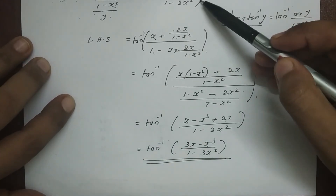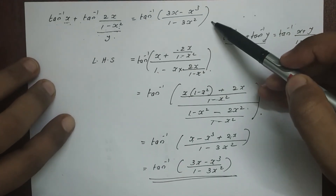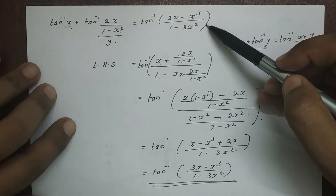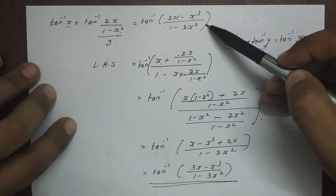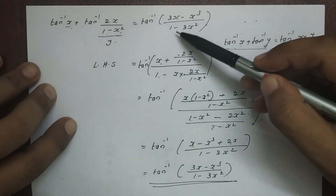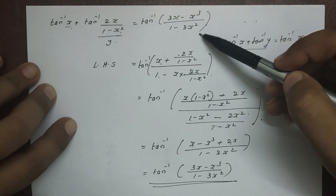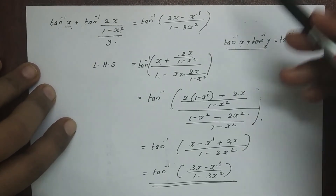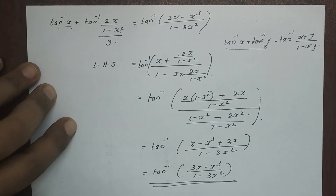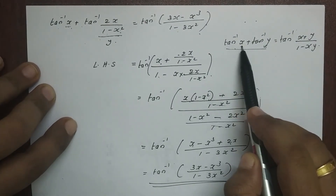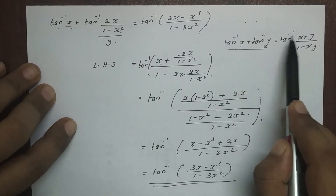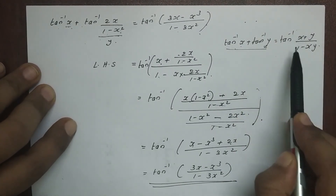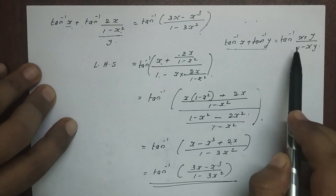This equals tan inverse x plus tan inverse y equals tan inverse x plus y divided by 1 minus xy, confirming LHS equals RHS.